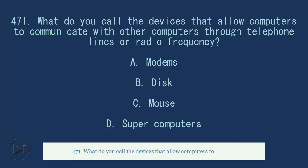471. What do you call the devices that allow computers to communicate with other computers through telephone lines or radio frequency? A. Modems. B. Disc. C. Mouse. D. Supercomputers. Answer, A. Modems.